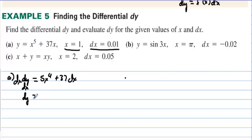So, the slight change in y, the change in y is equal to 5x to the fourth plus 37, and then times a very small change in x. And usually, these differentials represent very tiny numbers. dy is equal to 5 times 1 to the fourth plus 37, and then times 0.01, which is 42 times 0.01, which is equal to 0.42.